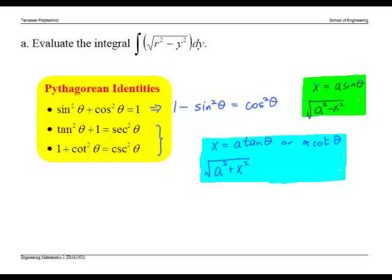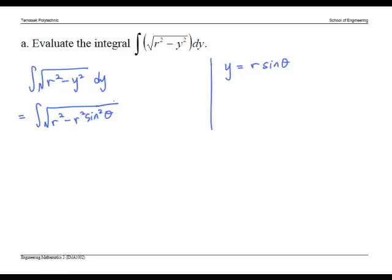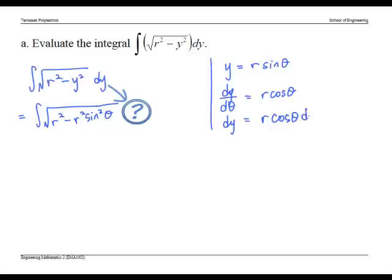For our case, it is the first situation. So this is our integral. If we let y equal r sine theta, then the integral becomes... We need to replace dy by an expression of theta. Differentiating y, we get dy equals r cosine theta d theta.